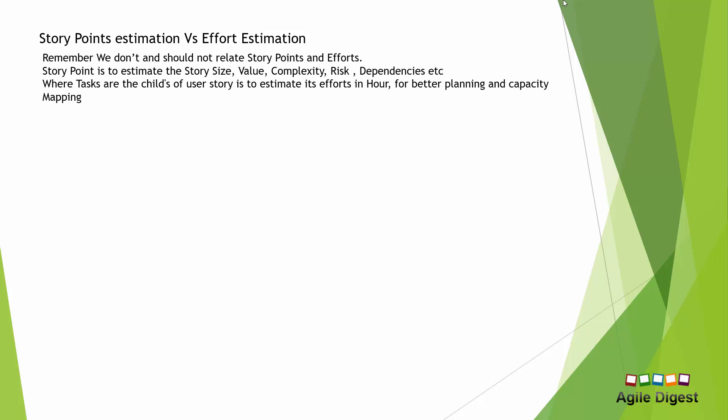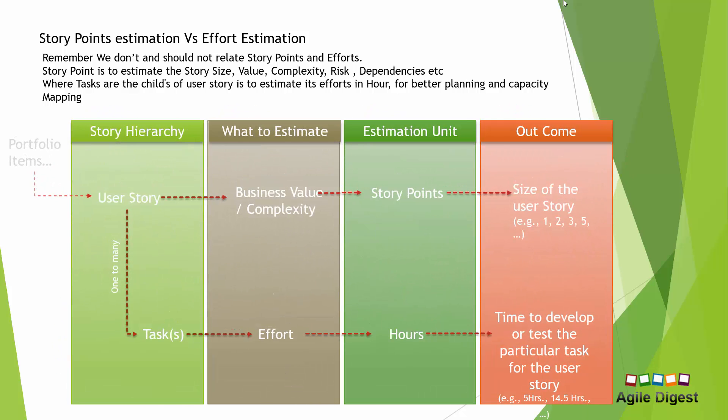Another common confusion is between effort estimation and story point estimation — these are totally different and should not be confused. Story points are estimated at the story level, while effort estimation is done at the task level. A task is a child of a story, and you can estimate effort hours per task based on who is working on it. One story can have multiple tasks — development, testing, UI, etc. We will cover mapping capacity with estimation during sprint planning.